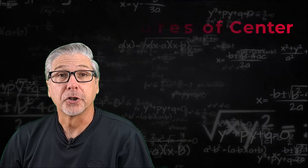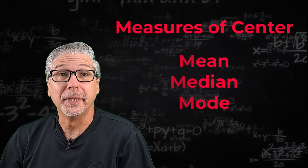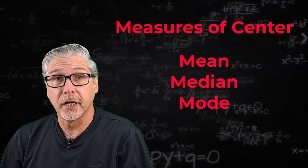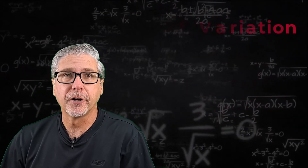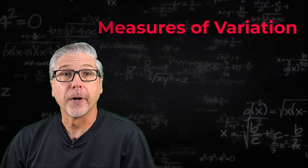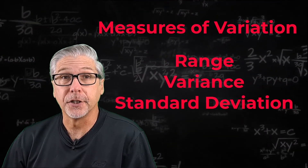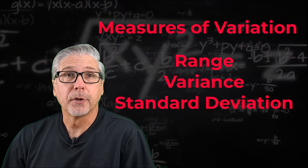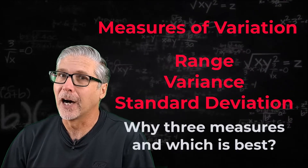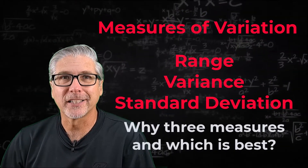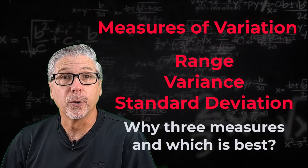In an earlier video I talked about the three measures of center: mean, median, and mode. In this one I introduce the three measures of variation: range, variance, and standard deviation. Why do we need three measures of variation? I'll explain in the next six minutes and let you know which one is the right one for you.